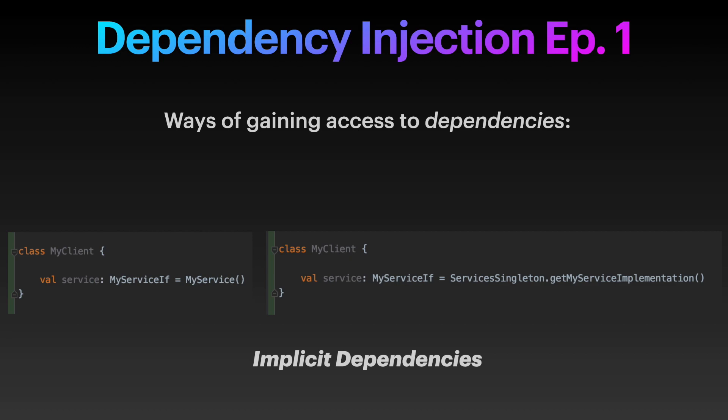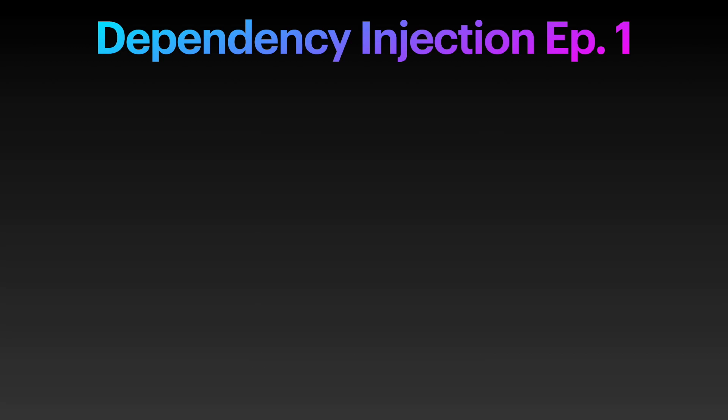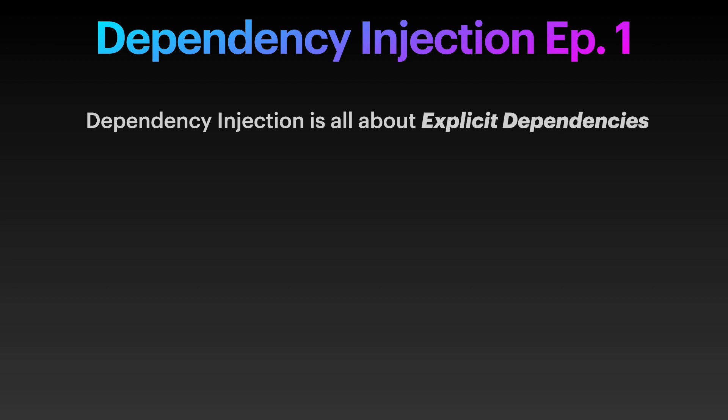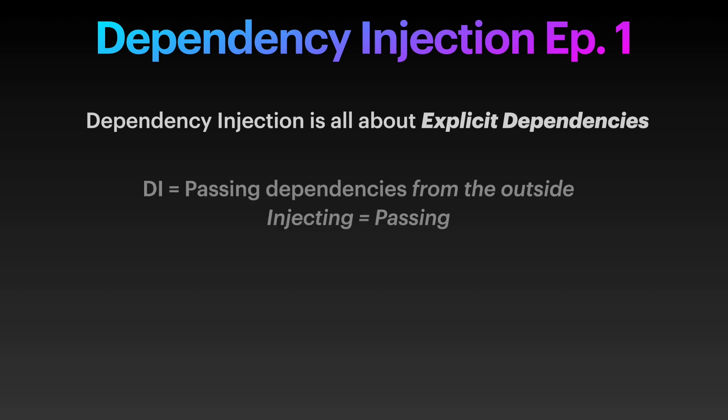Dependency injection, on the other hand, is all about explicit dependencies. You are going to give classes their dependencies from the outside, therefore making it loud and clear that this class needs this particular dependency. Someone will have to create and give it to them through a number of ways we will see right now. Essentially, that's what dependency injection is: passing dependencies to classes instead of classes creating their own. Passing equals injecting.